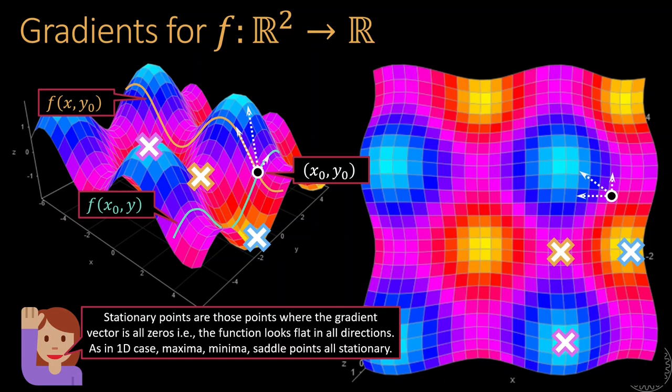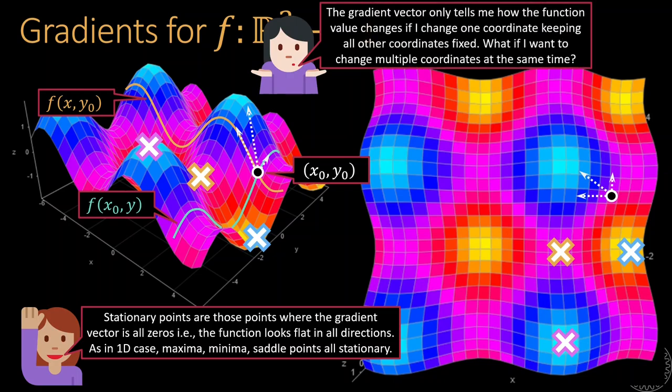Now, it turns out that even though the gradient captures the function behavior if only one coordinate is changed at a time, it is enough to predict everything else as well. To do this, we need a more powerful version of Taylor's theorem for multivariate functions. Note that this looks very similar to the earlier Taylor's theorem except that now the movement is not just left or right but an arbitrary vector because we are in multidimensional space. And unlike last time where we simply multiplied the movement Δx with the derivative, we must now take a dot product of the movement and the gradient. However, the movement still must be small otherwise this result may not hold.